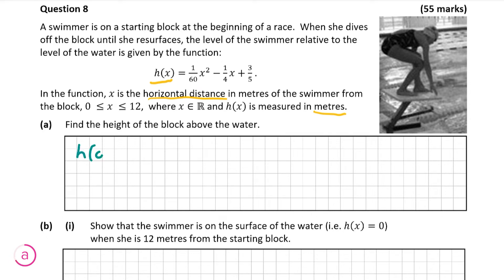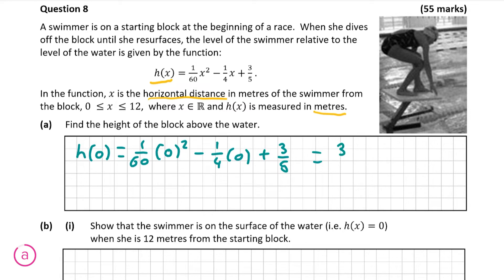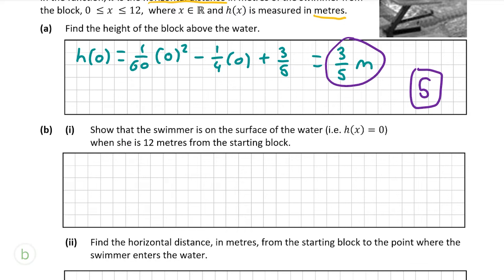So we can simply put x equals 0 into our function h of x. We've inputted 0 into our function, and all the terms which have a 0 in them will just equal 0, so what we're left with is just 3 over 5. Our answer is 3 over 5 meters, which gives us 5 marks for this question.